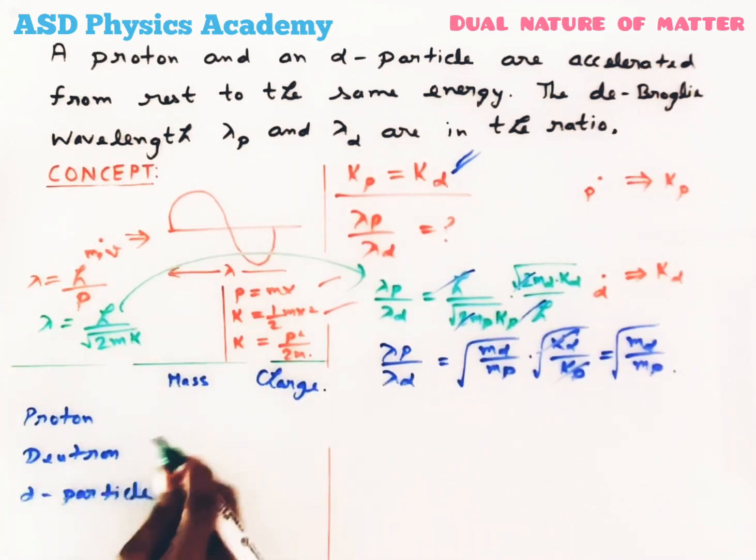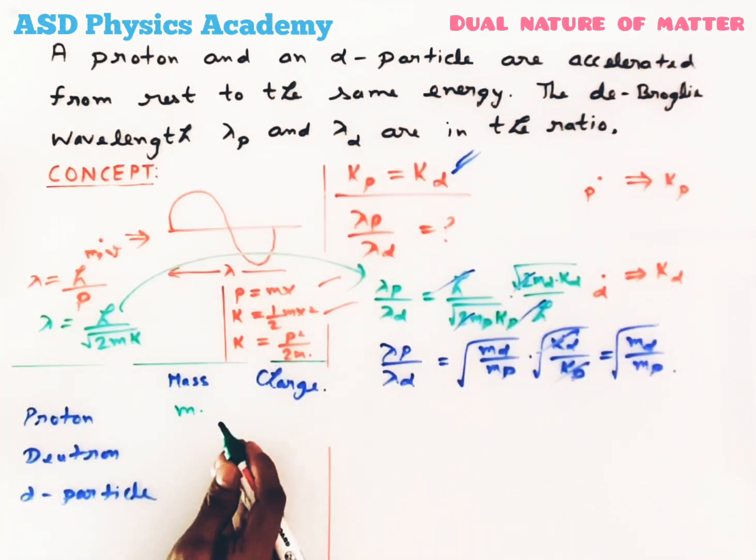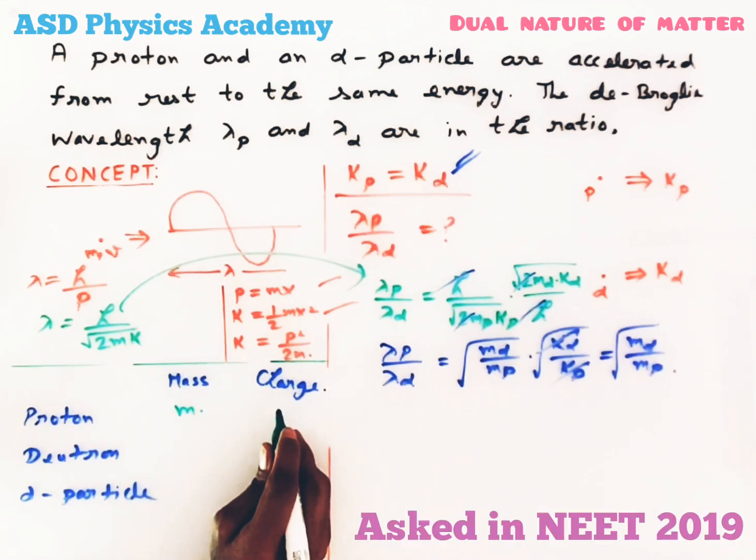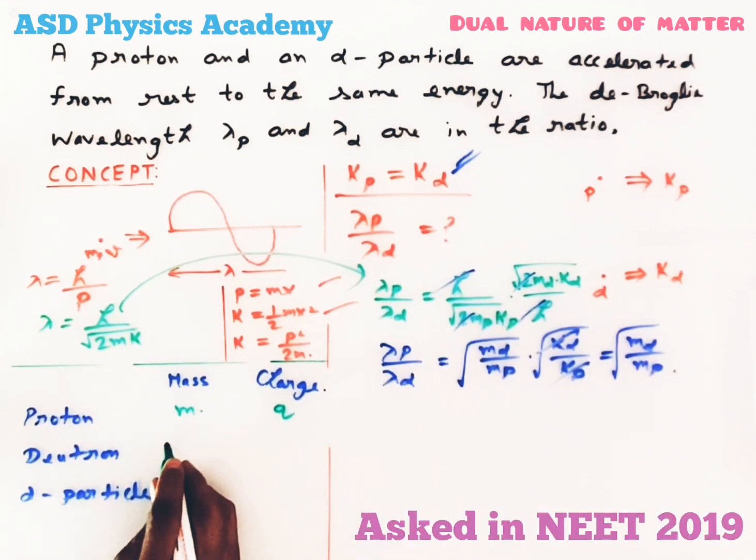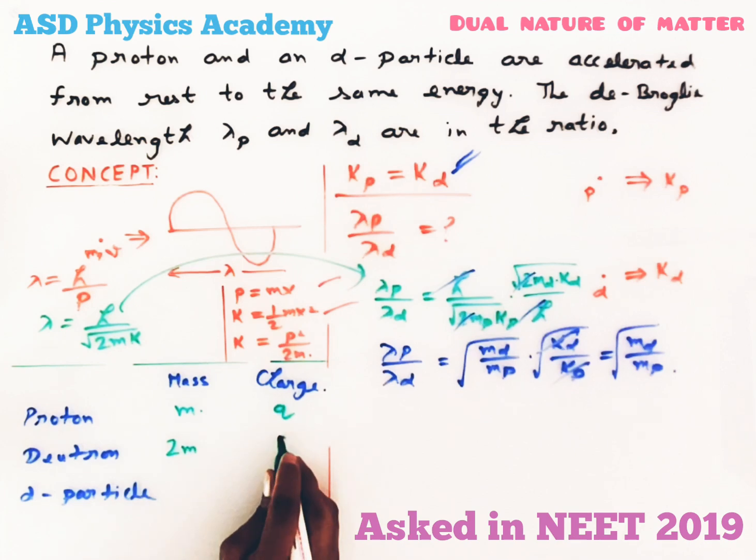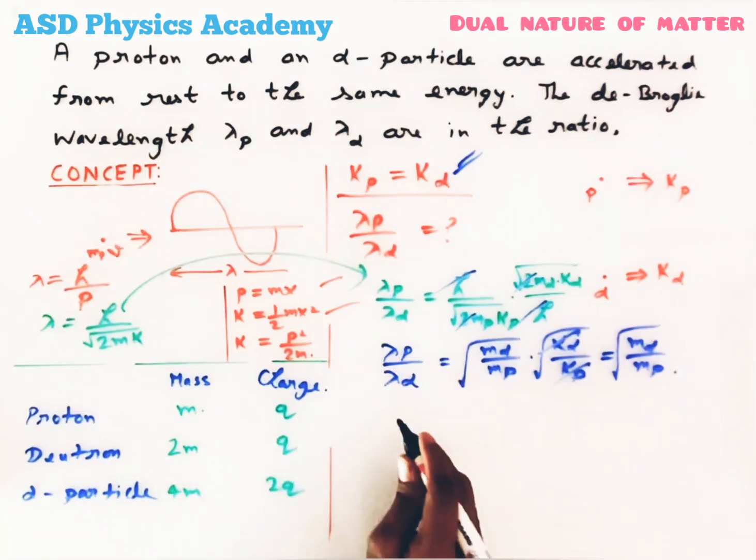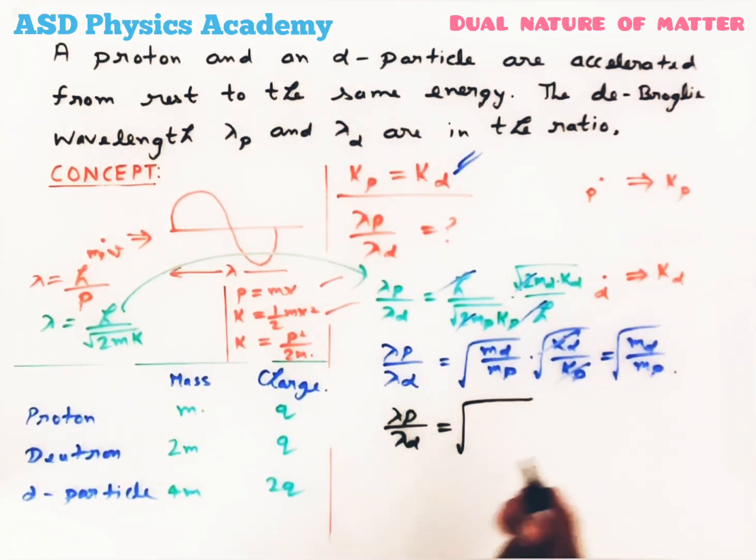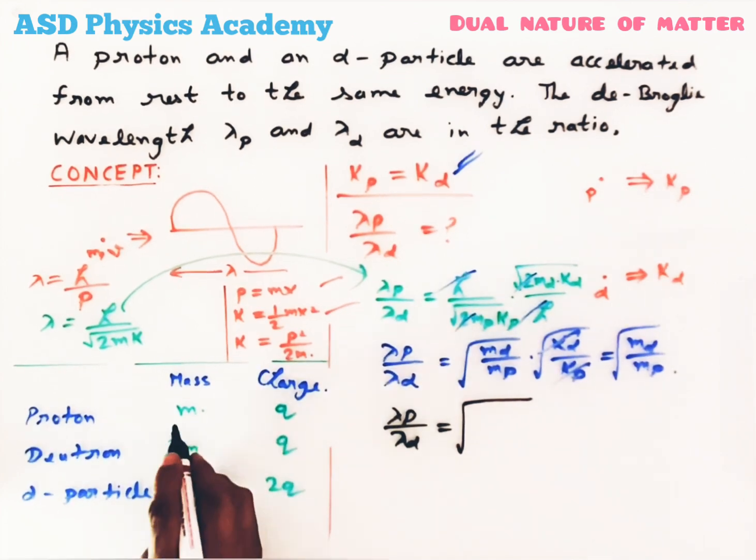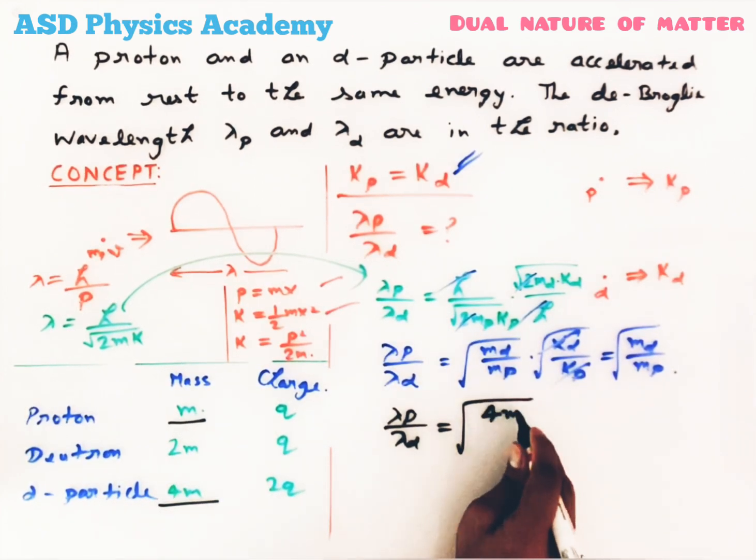Let's take mass of proton is m and charge is q. Mass of deuteron will be 2m, charge will be same q. Mass of alpha particle will be 4m and charge will be 2q. Now λp/λα is given by √(4m/m), so this m and m will cancel out.